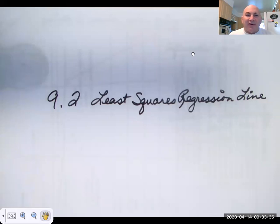Hello again statistics students. Today we're going to learn about the least squares regression line. In our last couple of lessons we learned about the correlation coefficient which tells us how linear a data set is. Well if the data set is linear we should be able to describe it with a line.